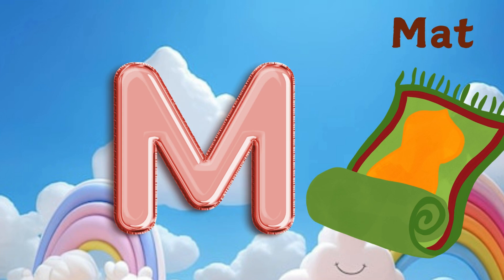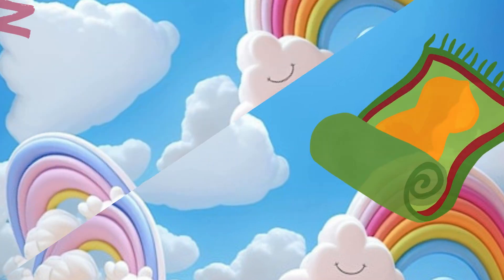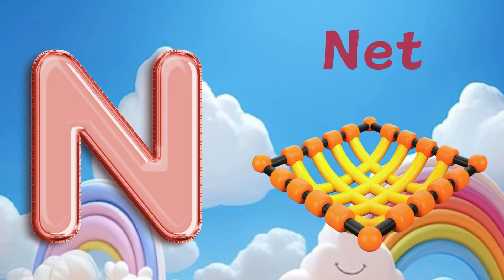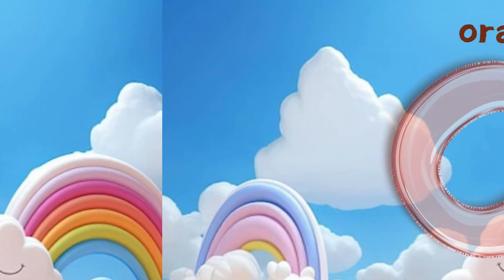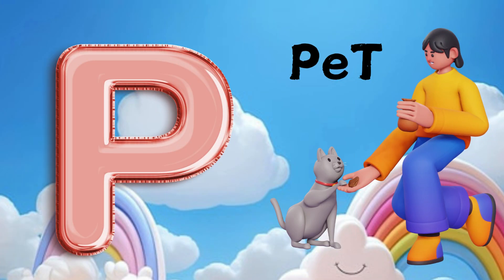M is for mat, m-m-mat. N is for net, n-n-net. O is for orange, o-o-orange. P is for pet, p-p-pet.